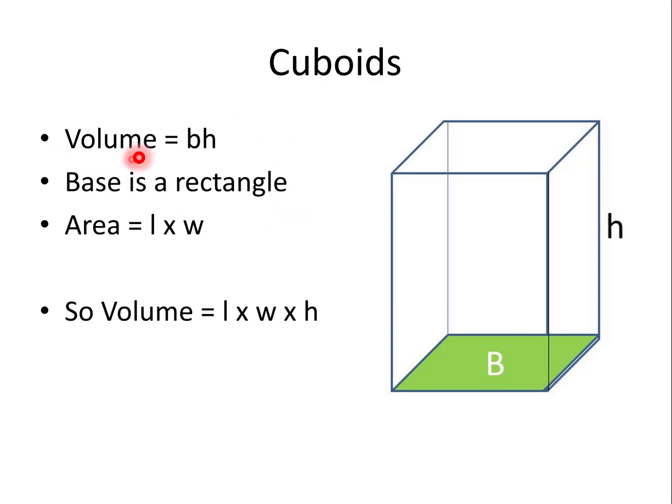Cuboids. We know from the previous slide that the volume of any prism is base times height. The base of a cuboid is a rectangle, and we know that the area of the rectangle is length times width. So if we replace base in this formula with length times width, we get length times width times height. So the volume of a cuboid is length times width times height. You need to know that without working it out.